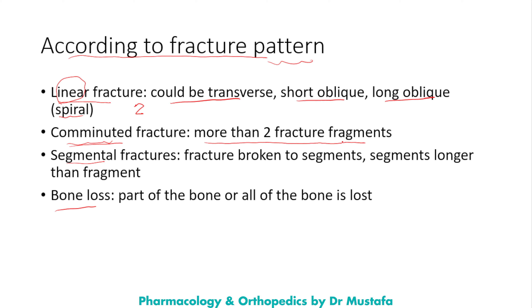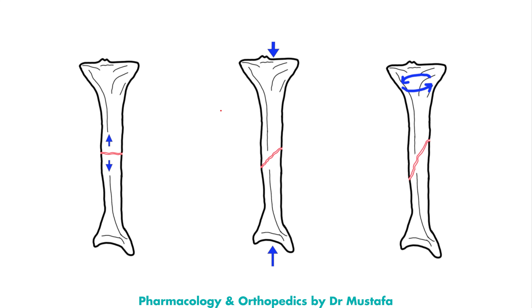In a comminuted fracture we have multiple fracture fragments. In the segmental fracture, the bone is broken into two segments, where the segment is longer than the fragment. In bone loss fractures, part or all of the bone is lost.